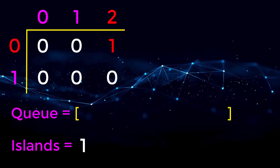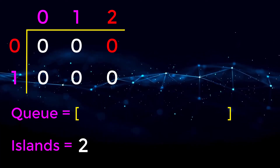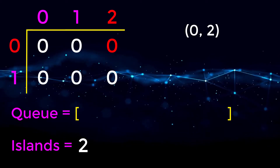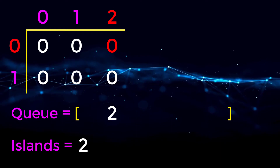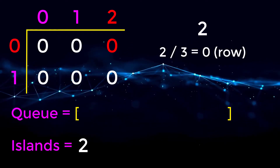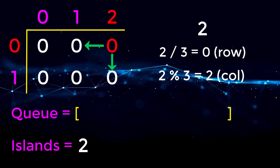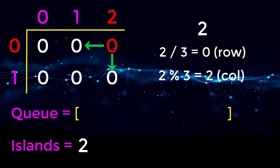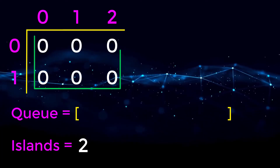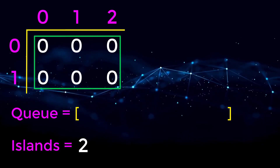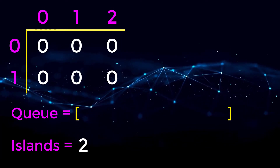Now we continue looping through our array looking for more land. Zero one is water so we skip it. Zero two is land, so we make another tally to our island count, change that position to zero, and add it to our queue. Zero two converted to 1D: zero times three plus two equals two. We perform BFS again — above and to the right of zero two are out of bounds, and to the left and below are water, so BFS ends. The second island was just one individual point. All remaining positions are water, so we're done. The final answer is two islands.